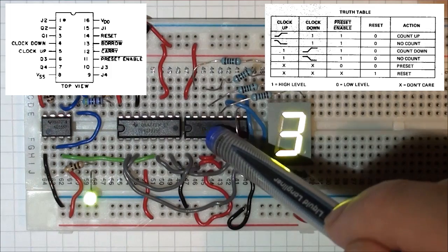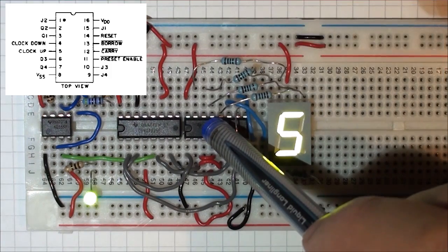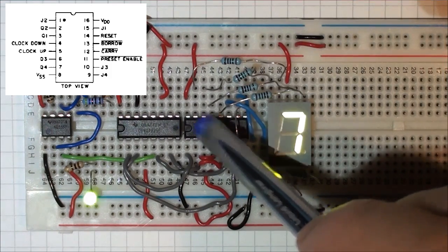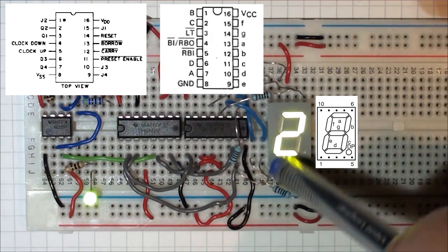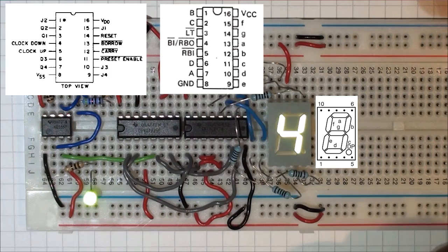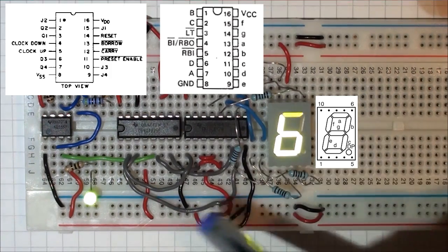So the BCD up-down counter is counting up only, and the inputs are feeding into this BCD to 7-segment decoder. The BCD 7-segment decoder, then through its resistor values to the different pins, gives us our output as shown here.